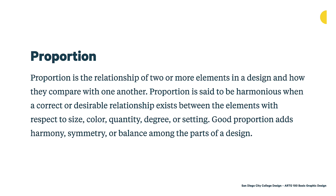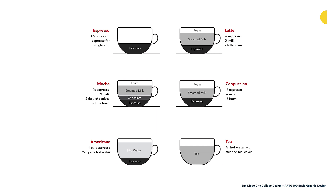One way to think about proportion is a little bit like coffee. When we look at coffee drinks made with espresso, there are different proportions that create different kinds of drinks. None of these drinks are really similar in the amount of hot water, steamed milk, foam, or espresso — they're pretty distinct, and that creates drinks with drastically different tastes. Sometimes you want something to be more dominant and other things to be in the background or a little smaller, so allowing the piece to have contrast in scale can really help create good proportion.